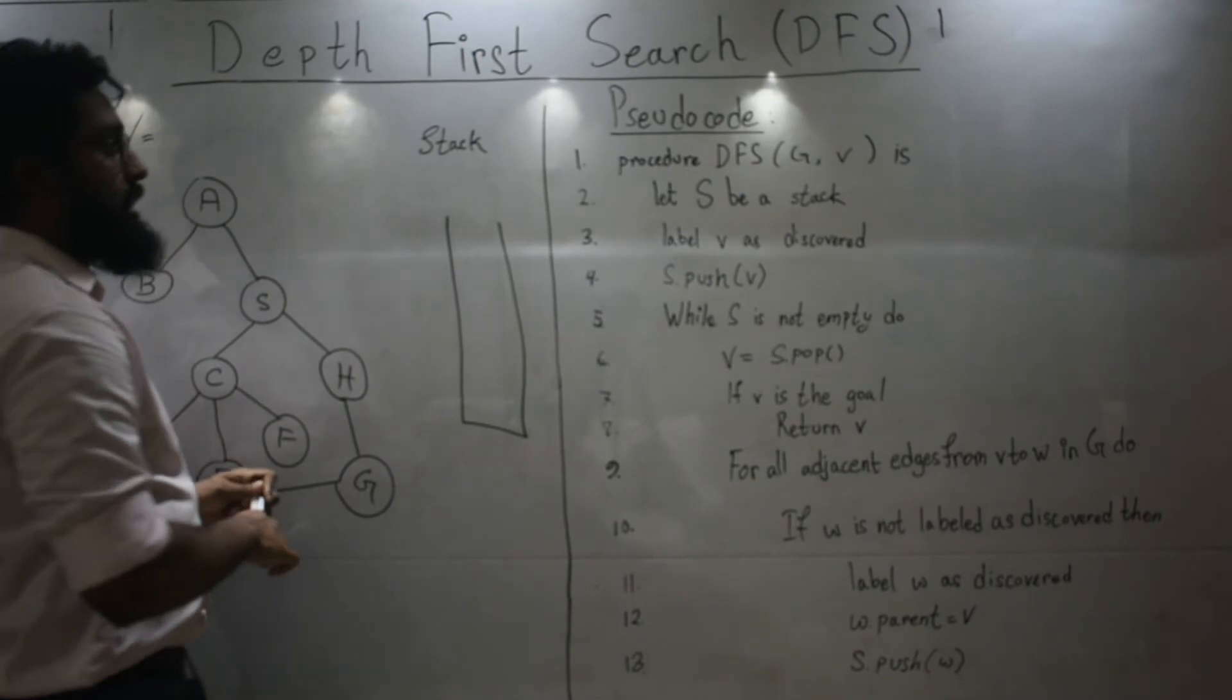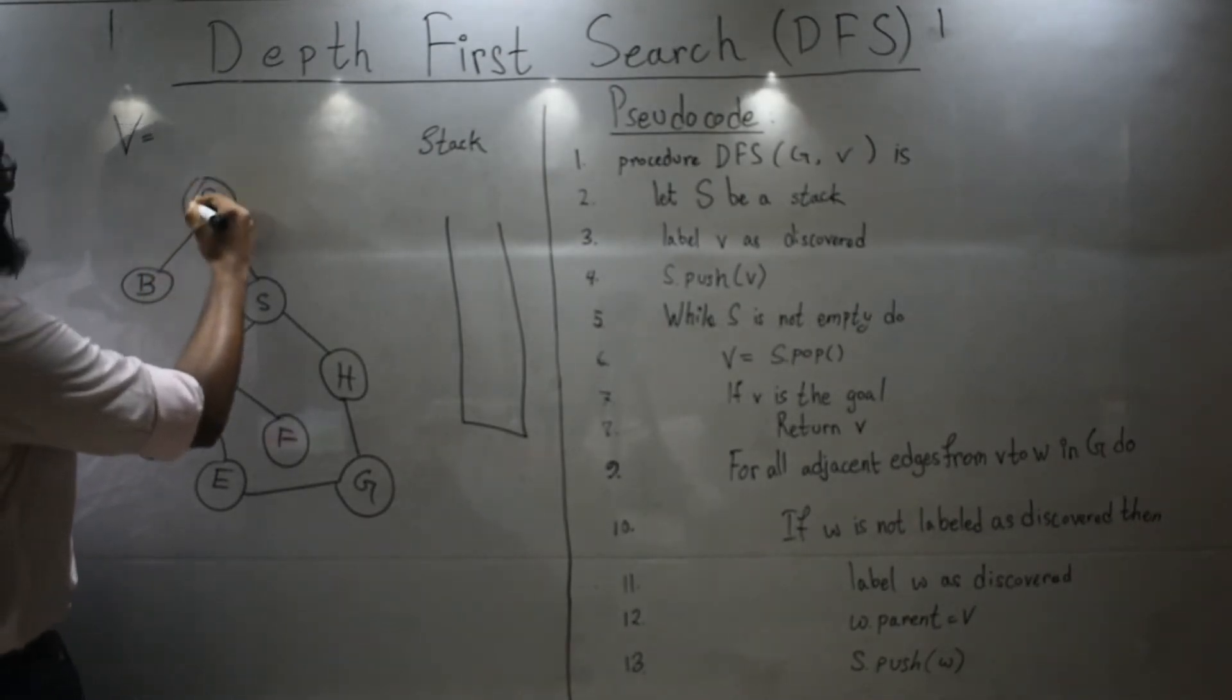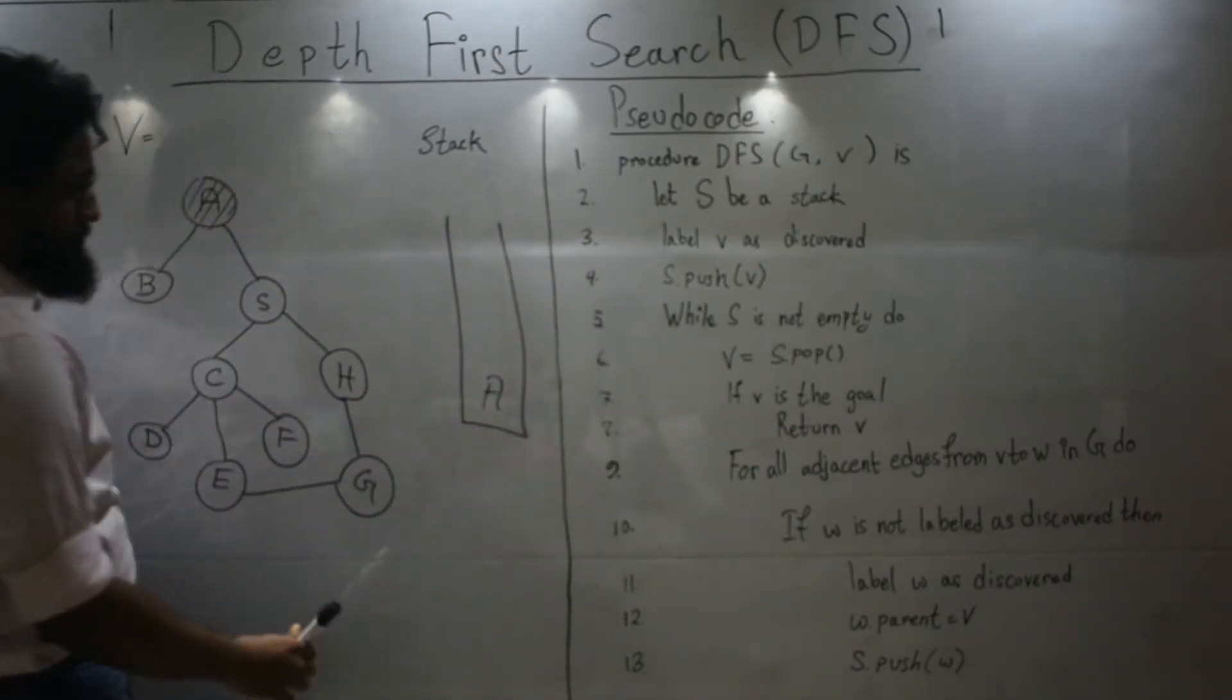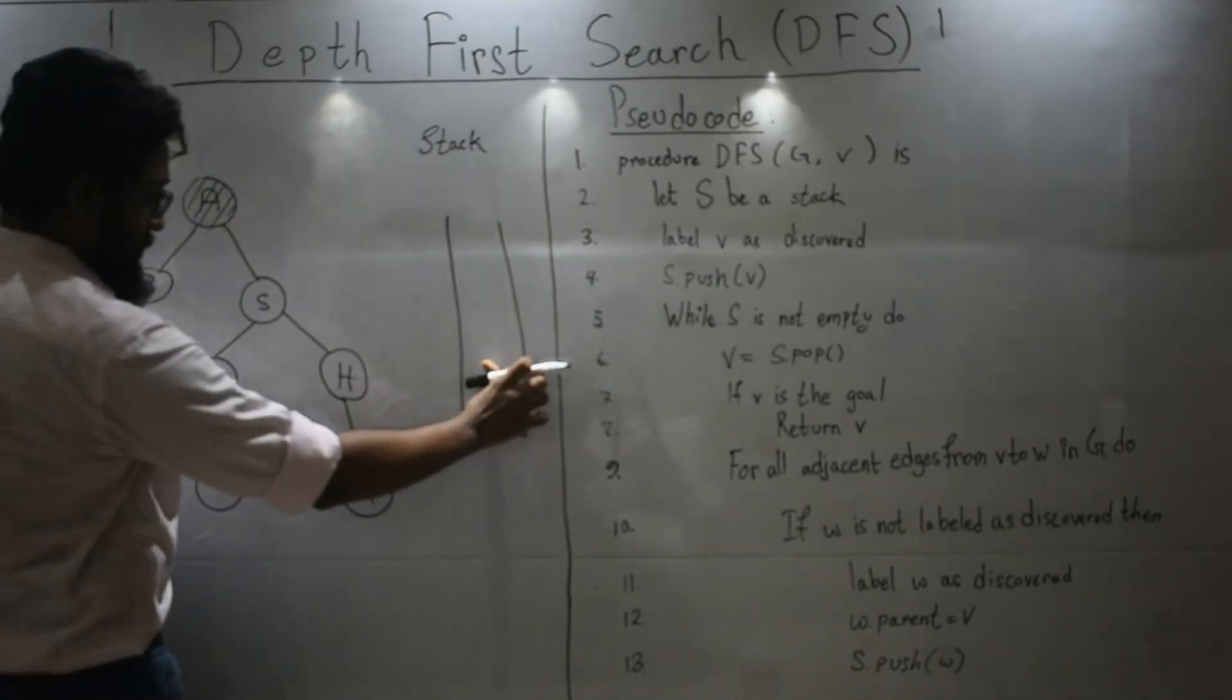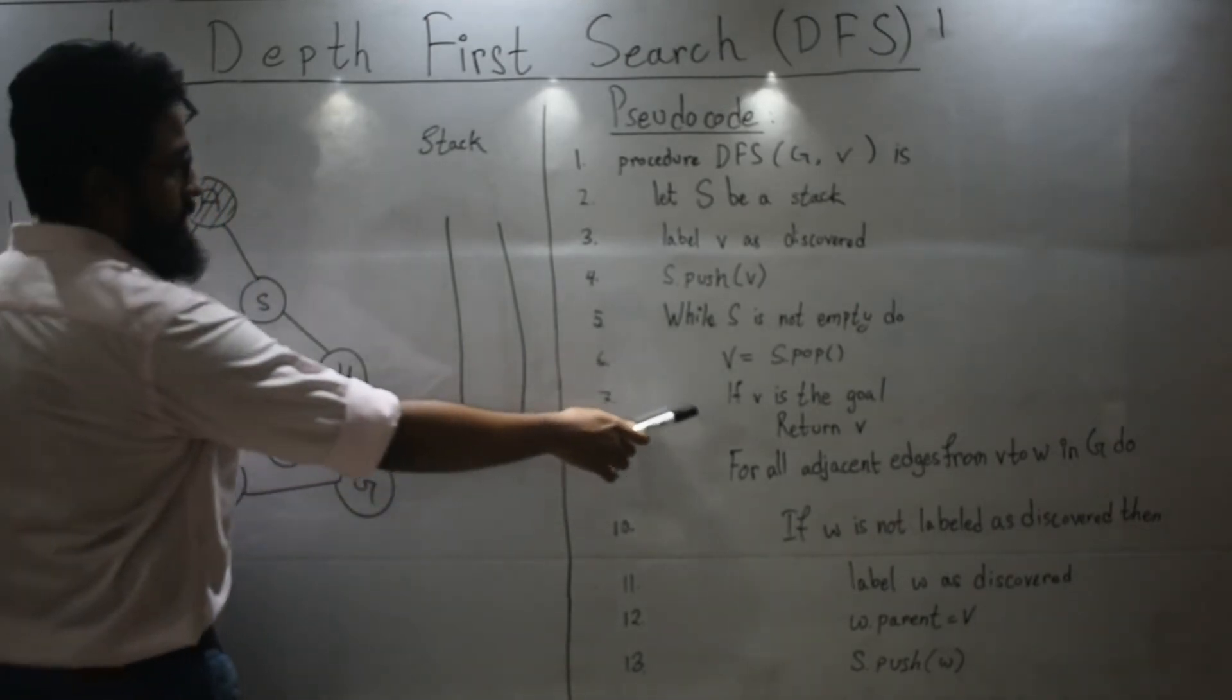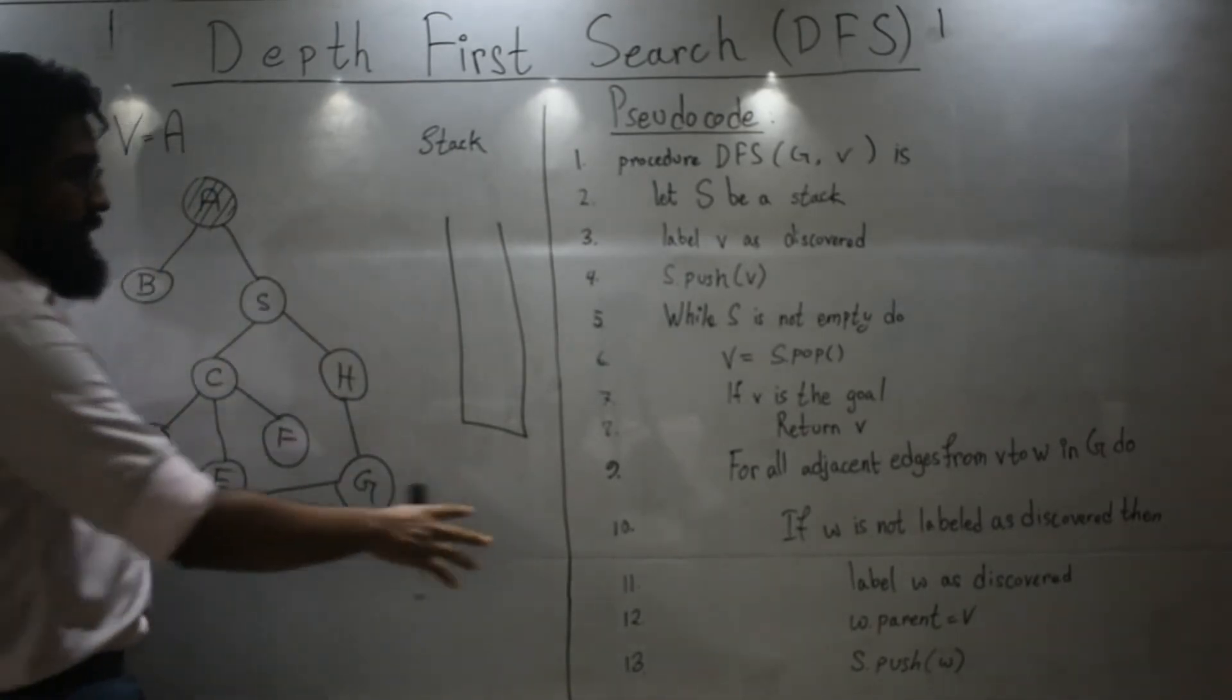Okay let's perform depth first search on this graph keeping A as my root node. Let's begin. Let S be a stack. Label V - what is my V? The root node is my V. Label it as discovered. Let's mark it. Push. While the stack is not empty - it's not empty - so let's enter this loop. Pop and place it in V. Let's pop. Place it over here. Is it the goal node? No. For this example I haven't yet set the goal node because I want you to see how the entire depth first search algorithm traverses this graph. Let's just forget this one momentarily.